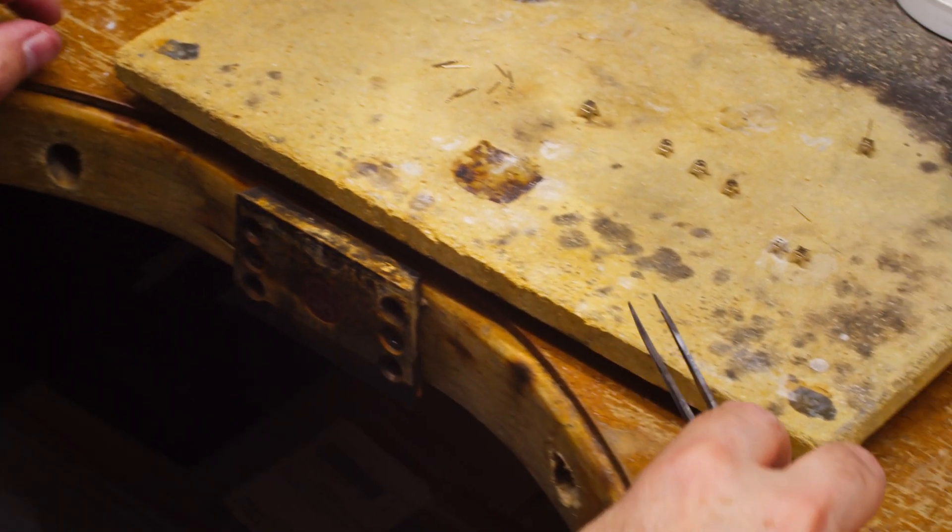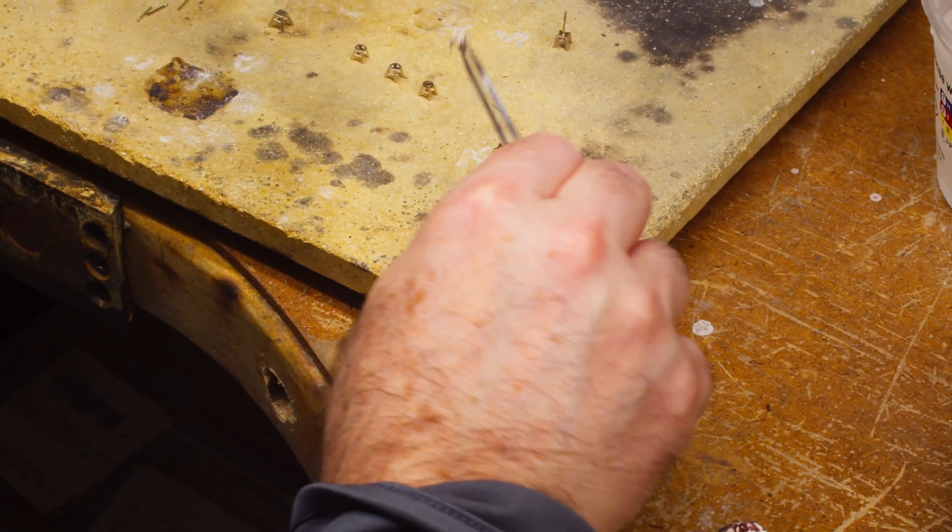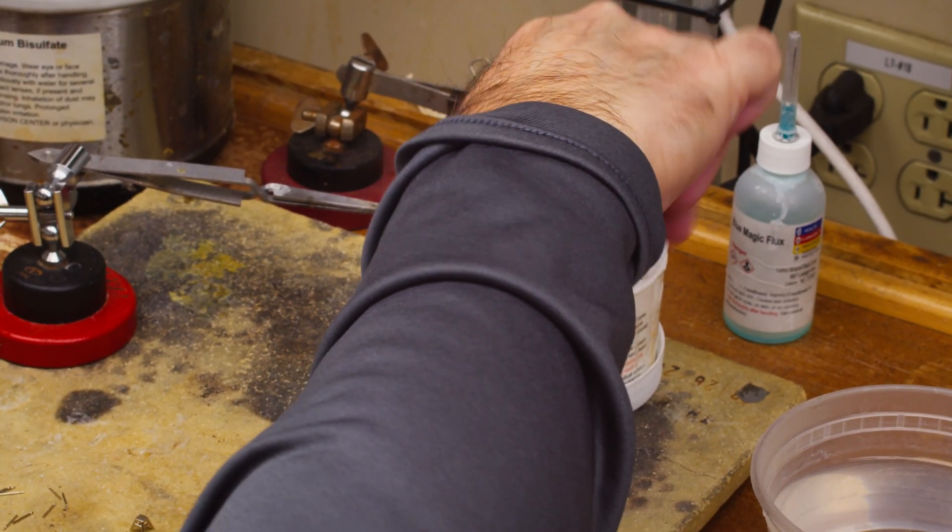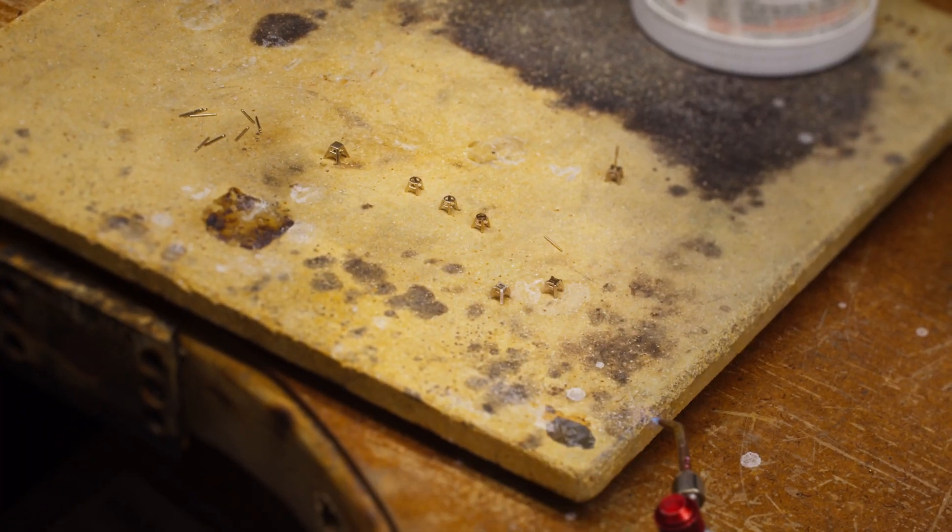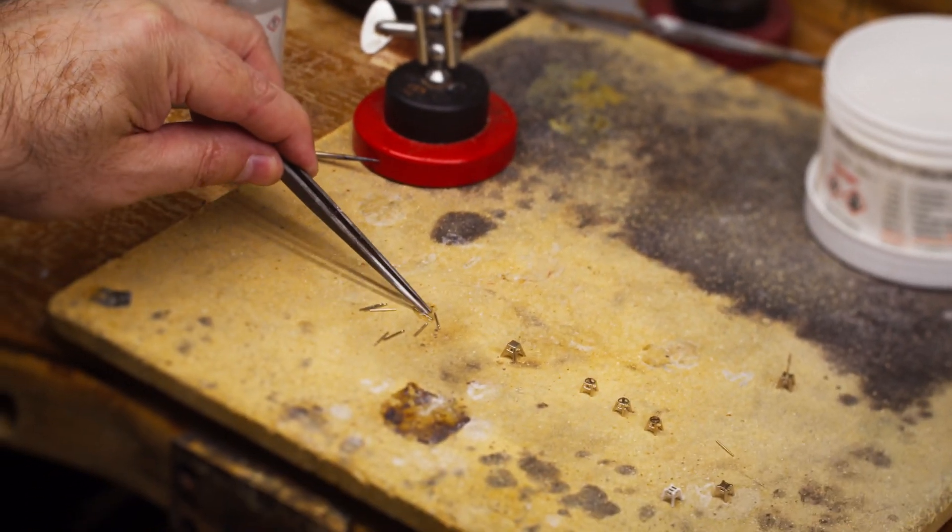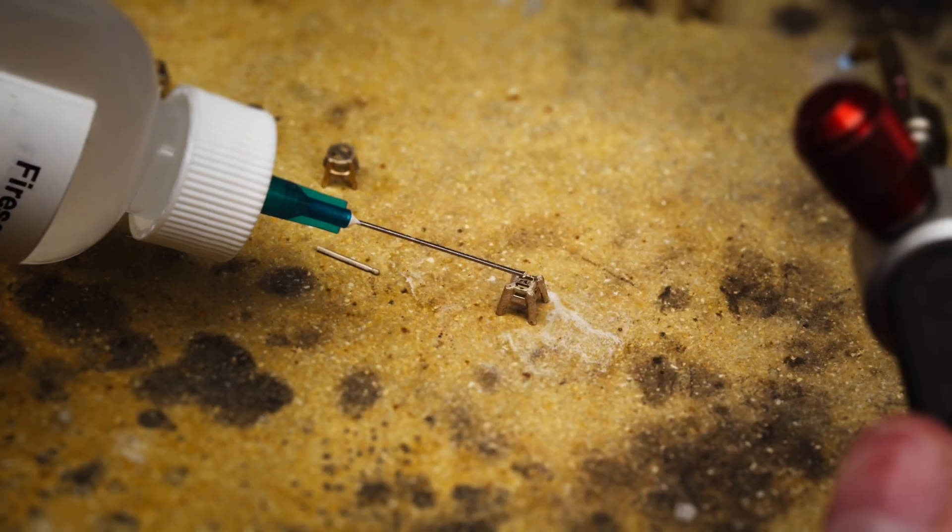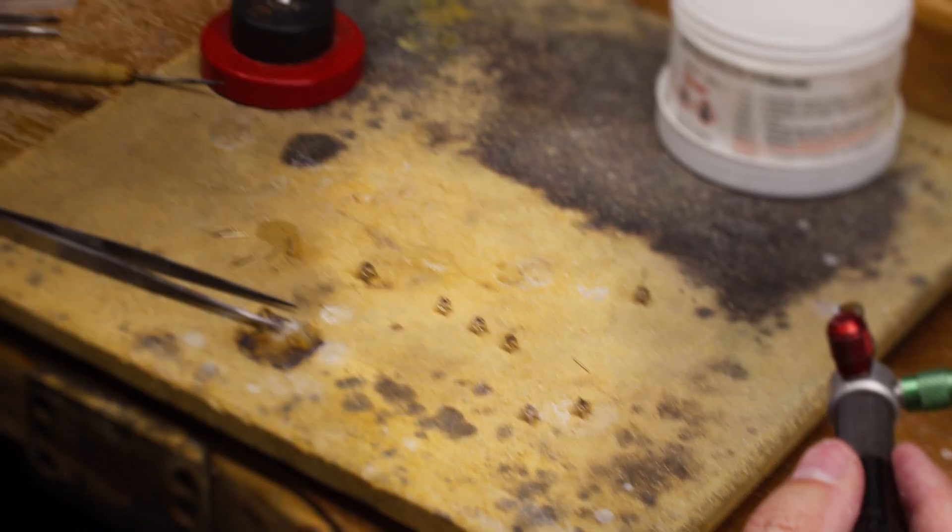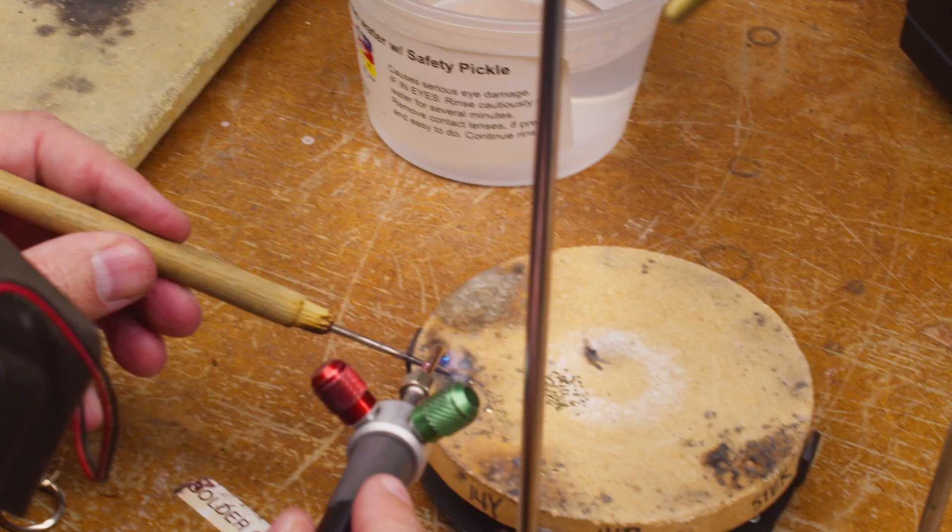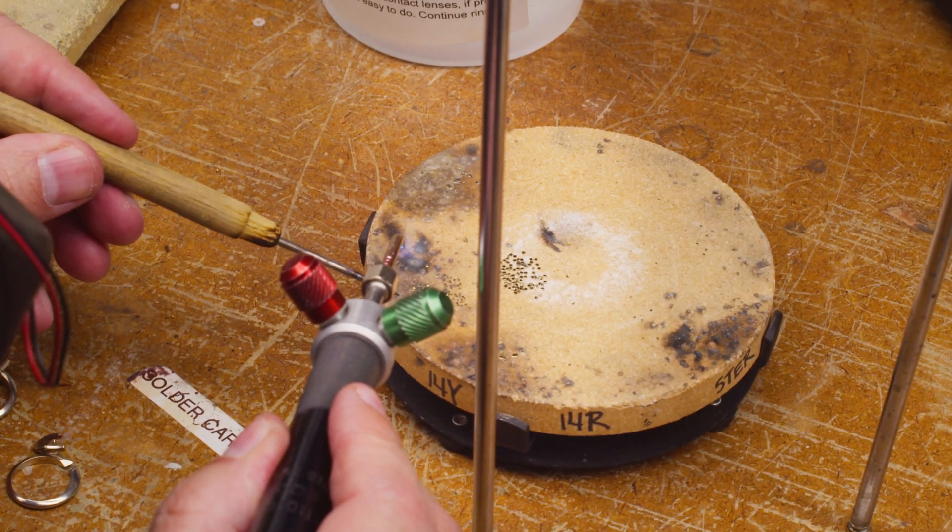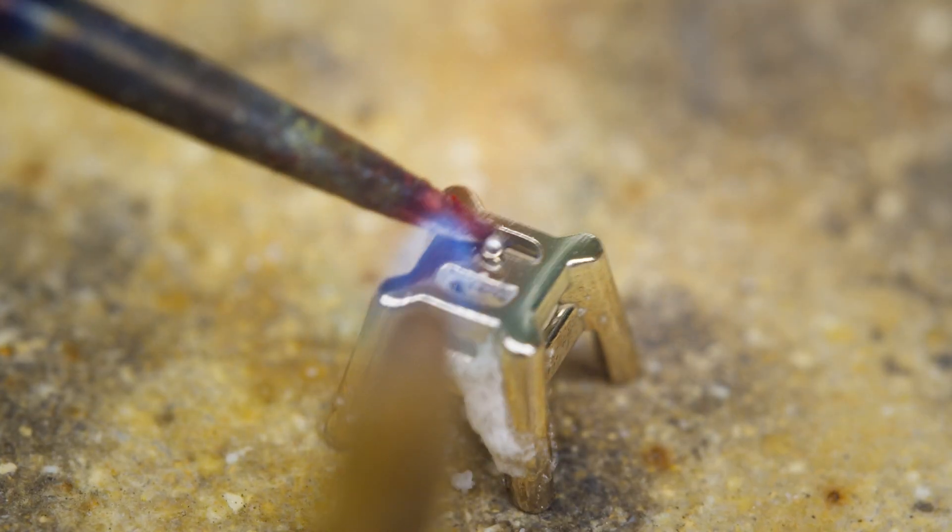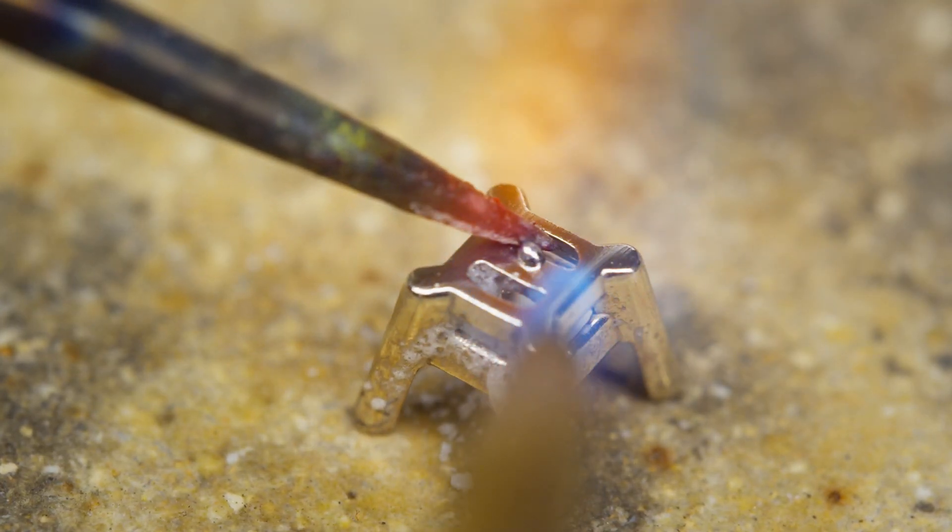In this example, I'll be soldering an earring post onto a square earring. I'm going to dip it in my boric and alcohol mixture, heat it up, add a little bit of alcohol on my post, put a drop of fire scoff on it, and pick up a very small piece of 14 karat white easy solder.